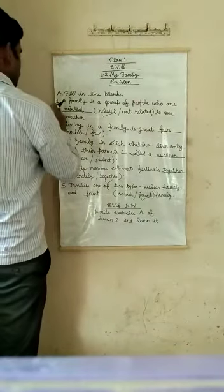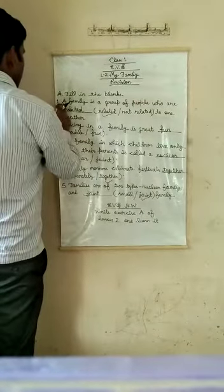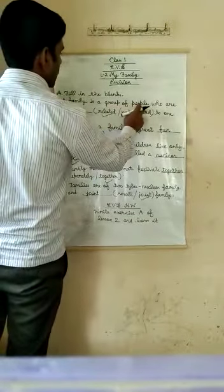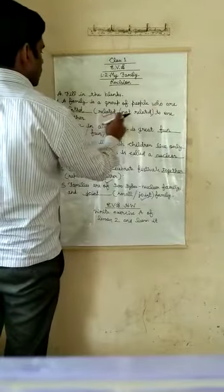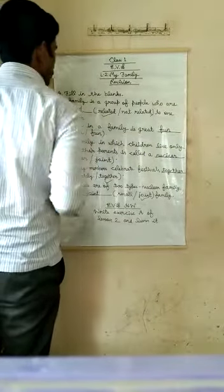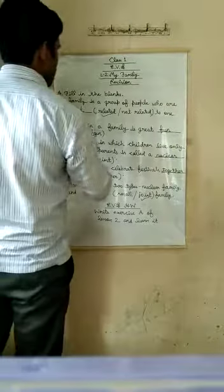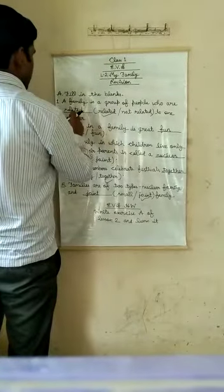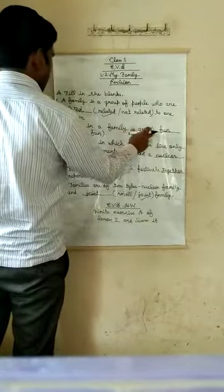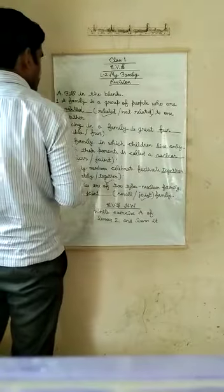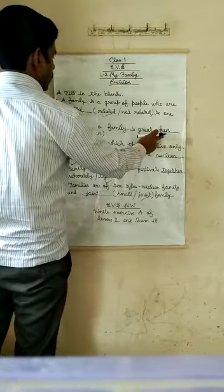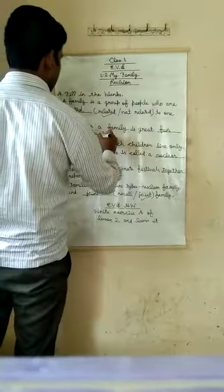Riktasthaanu ki purti karo. First, a family is a group of people who are related, not related to one another. Ek parivar logon ka samooh hota hai jo ek dusre se sambandhit rahate hain. Second, living in a family is great fun. Ek parivar mein saath rahane se atyant anand hota hai. So correct answer is fun.